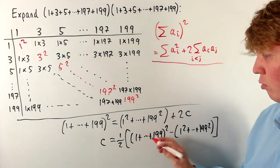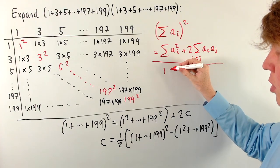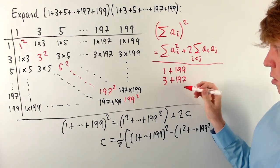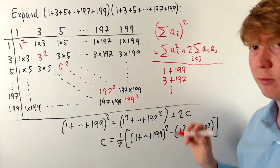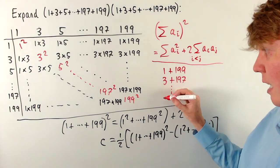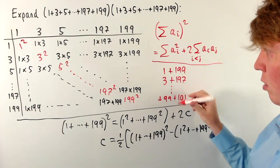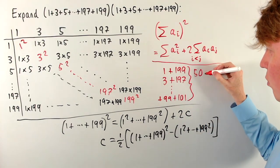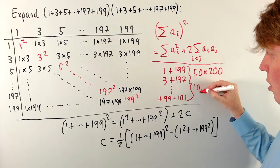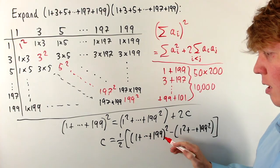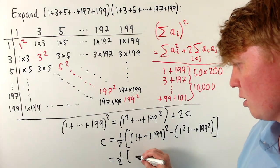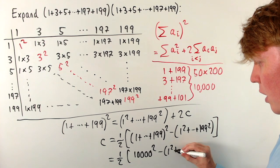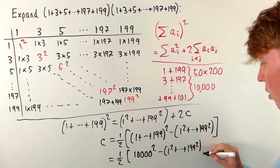We can calculate the sum 1 + 3 + ··· + 199 by pairing: 1+199=200, 3+197=200, 5+195=200, all the way to 99+101=200. We have 100 numbers total, giving 50 pairs, so 50×200 = 10,000. Therefore (1 + 3 + ··· + 199)² = 10,000² = 100,000,000, and we subtract the sum of all odd squares up to 199².